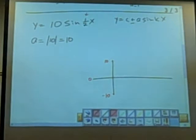Now the 1 half, that's what? Our k, right? So, therefore, our period would be 2 pi over k, which would be 2 pi over 1 half.